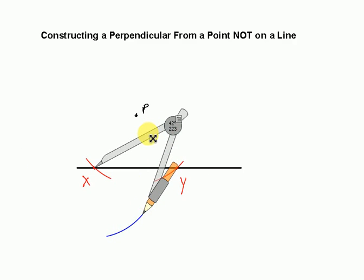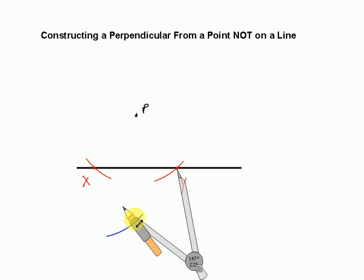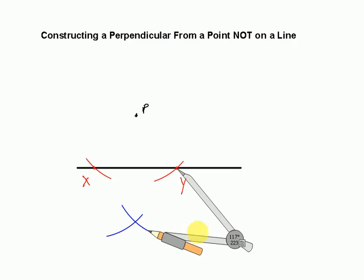Now take your compass. You don't need to change the size of the radius. Put it at point Y now for your pivot point and move it back around right there. Make this tick mark right there.